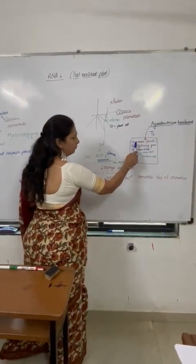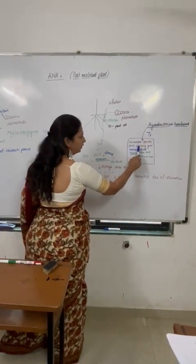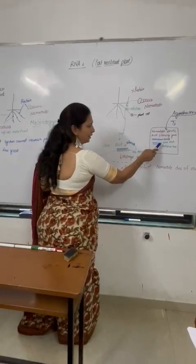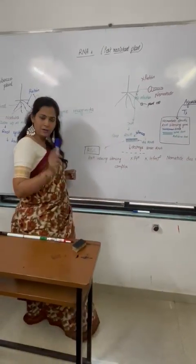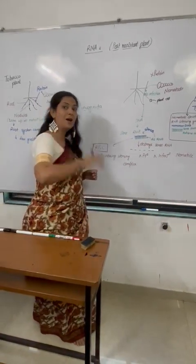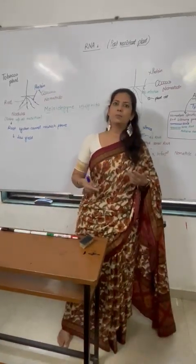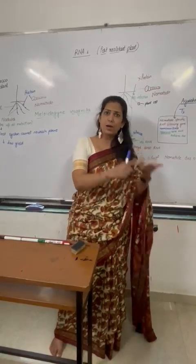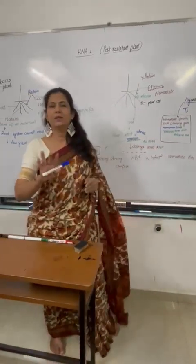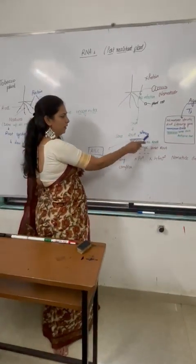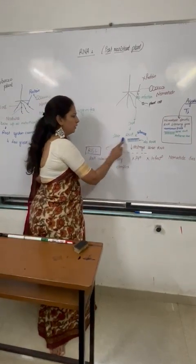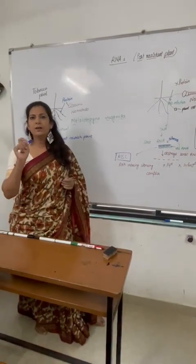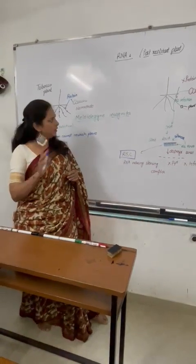Using Agrobacterium, nematode-specific RNA silencing genes were expressed in plant cells, which produced double-stranded RNA. For RNA silencing, what is required? The answer is double-stranded RNA. It silenced the nematode's sense RNA so that nodule formation could not occur.